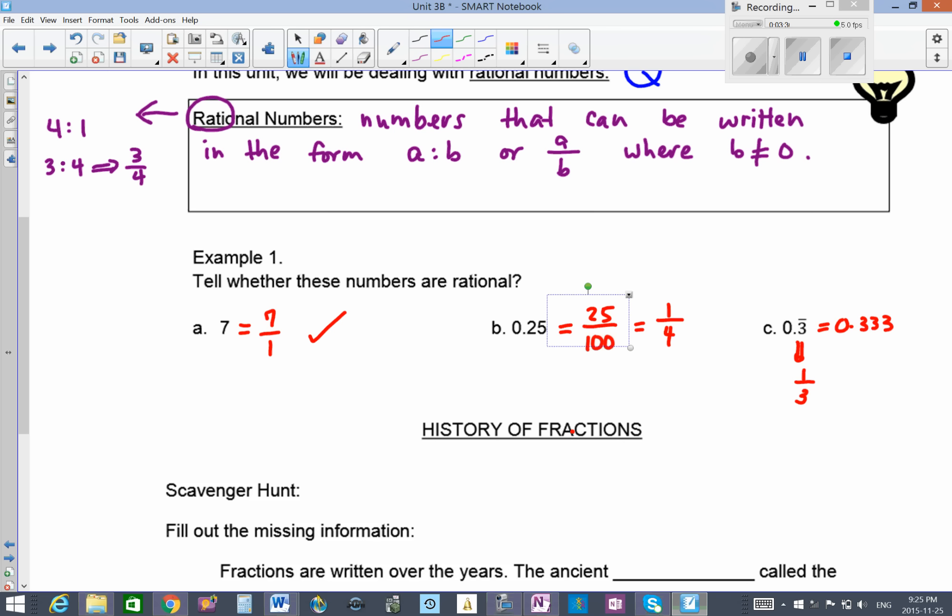What numbers are rational numbers? We can say all the integers. When I say integers, it already includes whole numbers and natural numbers. All fractions, all decimals that end, or we refer to this as terminating decimals, and decimals that repeat, or we refer to this as recurring decimals.